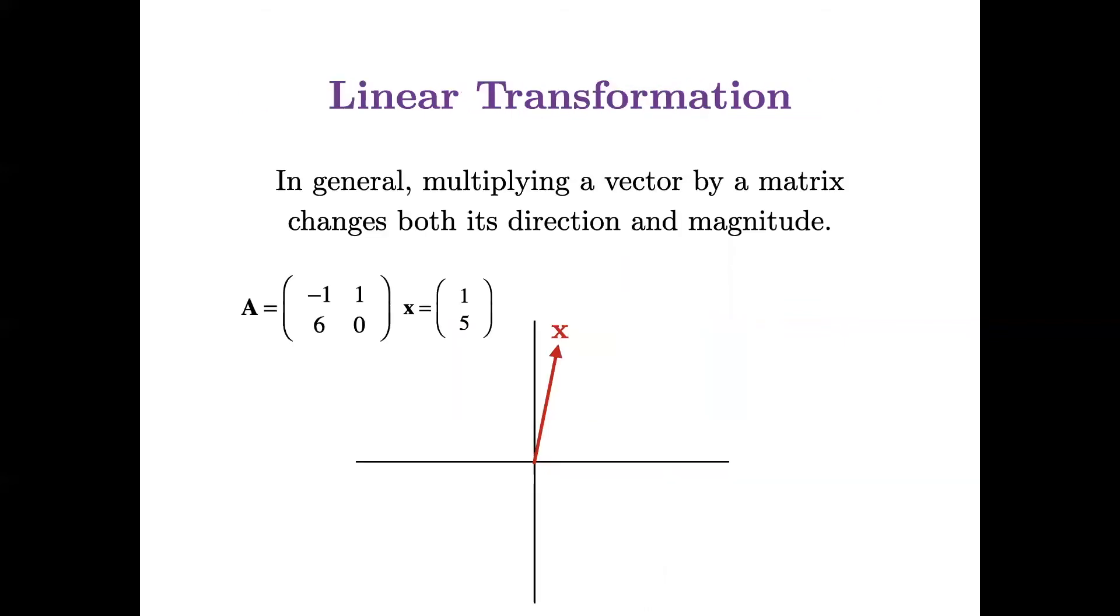Let's take an example. Here I have a matrix A and a vector x. So, in general, when I multiply a vector x by a matrix A, it's going to change both its direction and its magnitude. So here is the vector x in red and the vector Ax is in blue. It was transformed by multiplication by A.